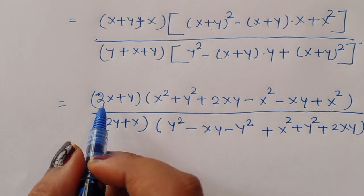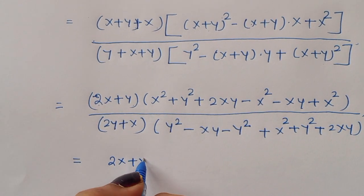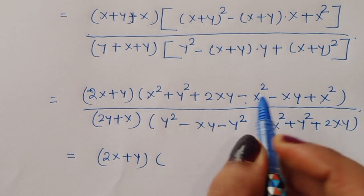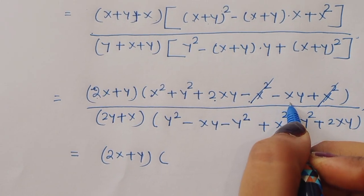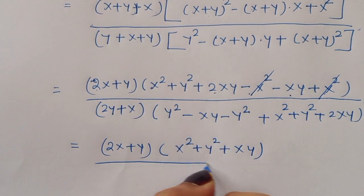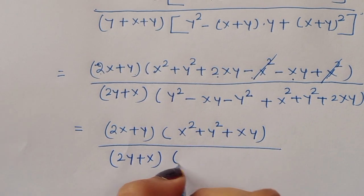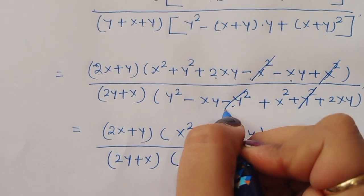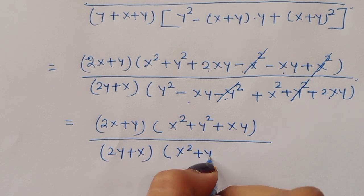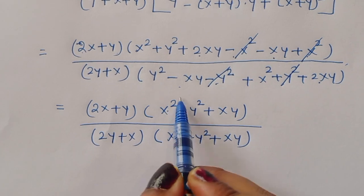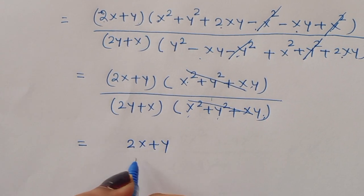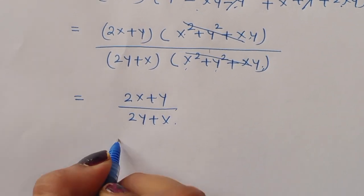After simplification, the numerator becomes (2x + y)(x² + y² + xy) and the denominator becomes (2y + x)(x² + y² + xy). The common factor (x² + y² + xy) cancels, leaving the result as (2x + y) divided by (2y + x).